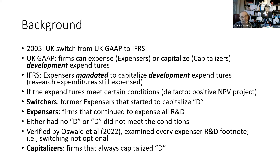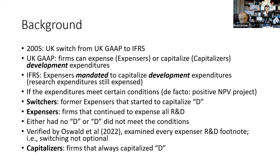There was also a third group of firms — capitalizers — firms that even under UK GAAP had capitalized the D. Unfortunately for these tests, there are too few of those. Once you start disaggregating firms into various earnings management buckets — there are three buckets — they're just too few capitalizers to work with, and some cells actually have zero.